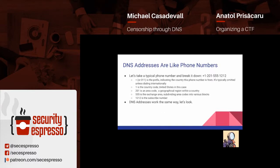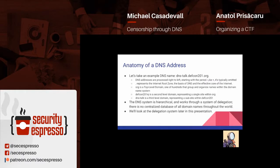DNS addresses are like phone numbers. If you take a typical phone number like 1-201-555-1212, DNS works pretty much the same way. One is the international dialing prefix, one is the country code — United States in this case — 201 is an area code, 555 is the exchange, 1212 is the subscriber name. DNS addresses work the same way. Here's an example DNS name: dnstalk.defcon201.org. Unlike phone numbers, they are processed right to left. You start with the dot, which represents the internet root zone, then org — the top level domain — then defcon201, the second level domain, and dnstalk is the third level domain.